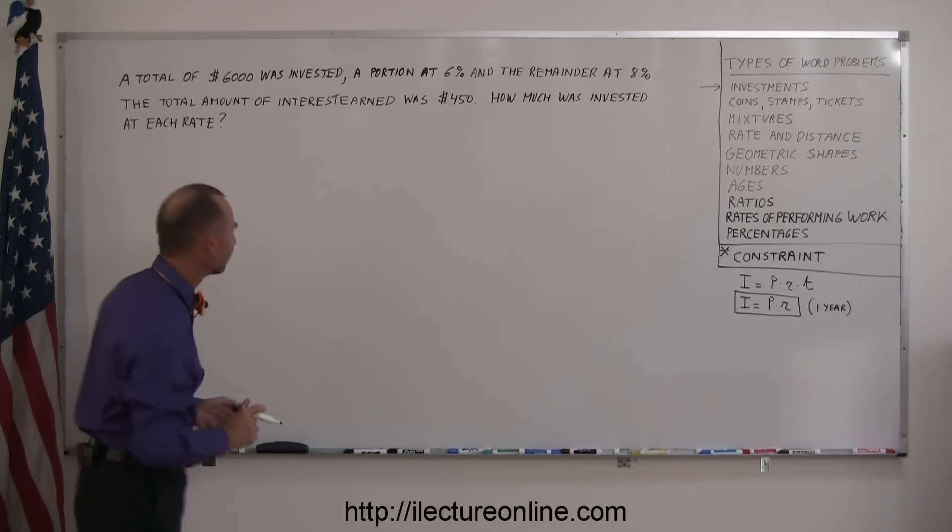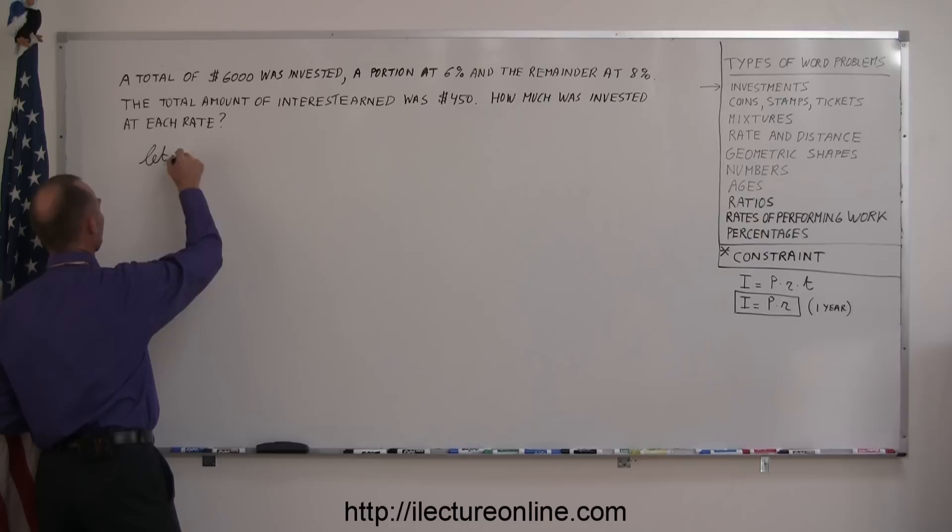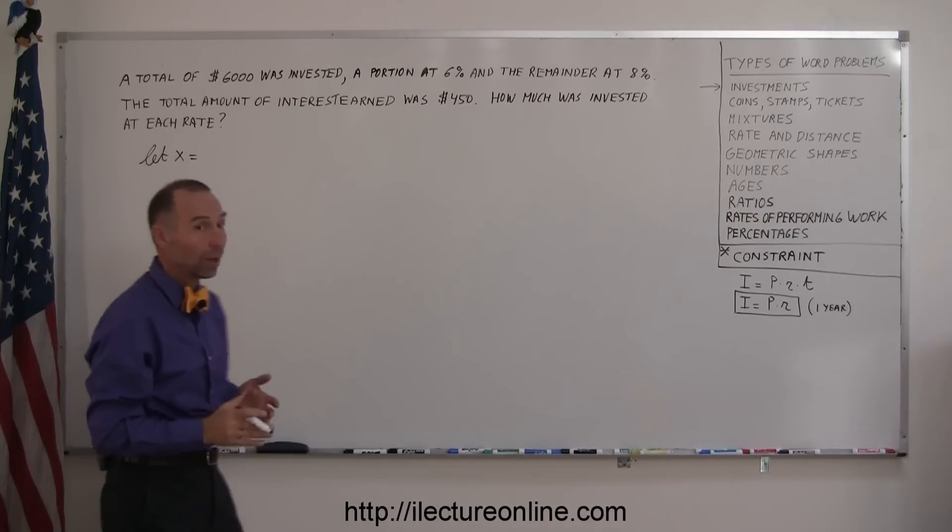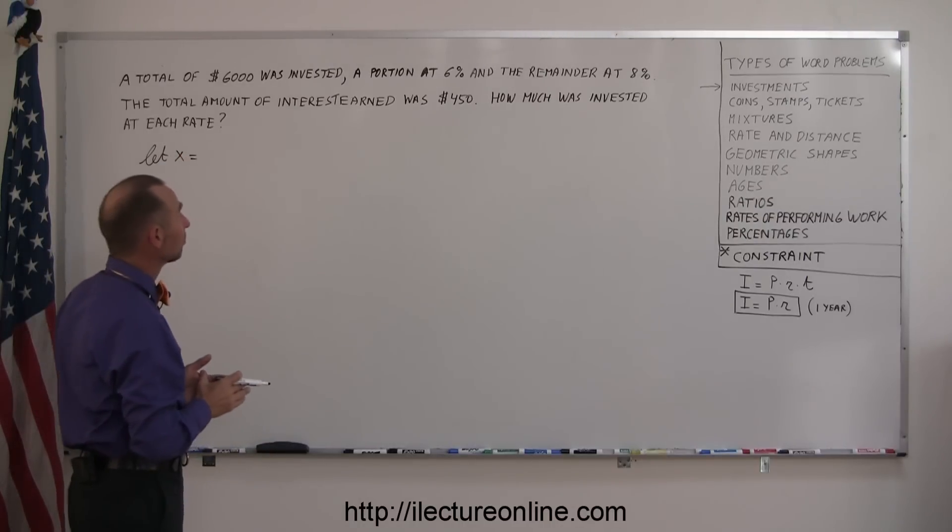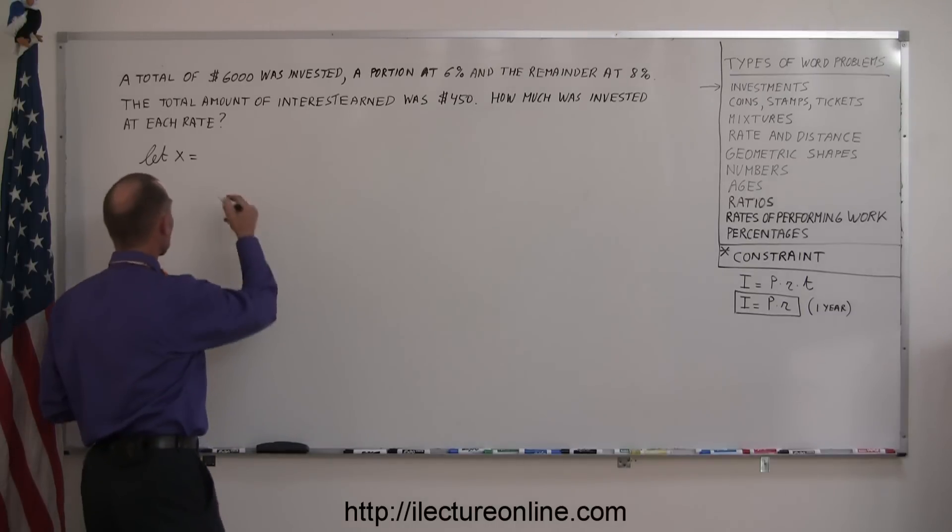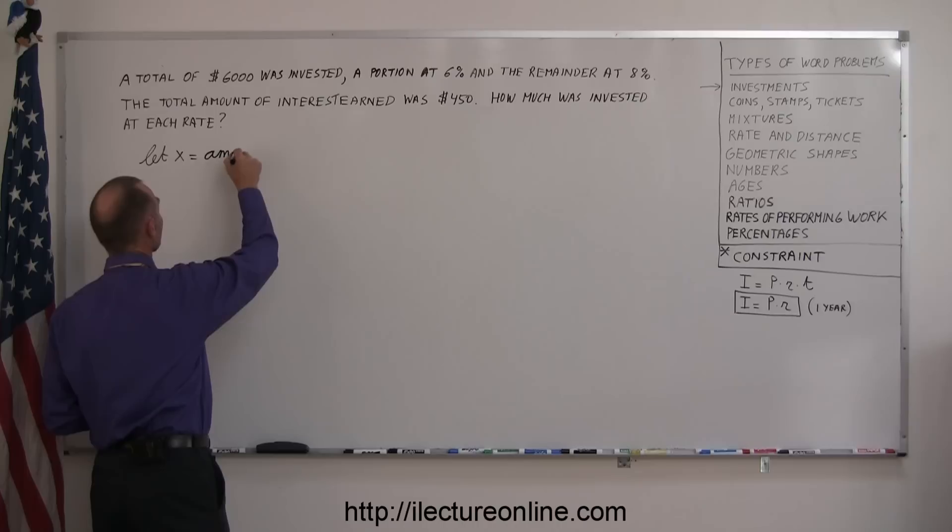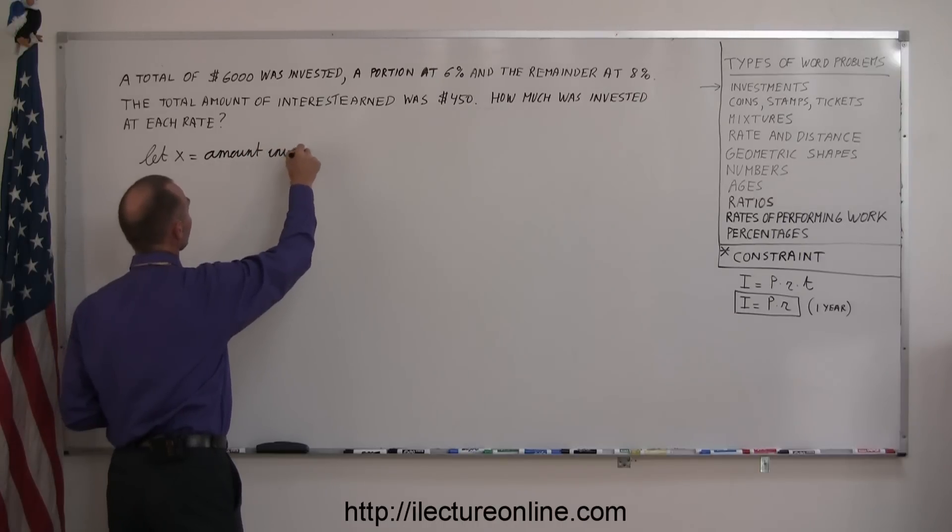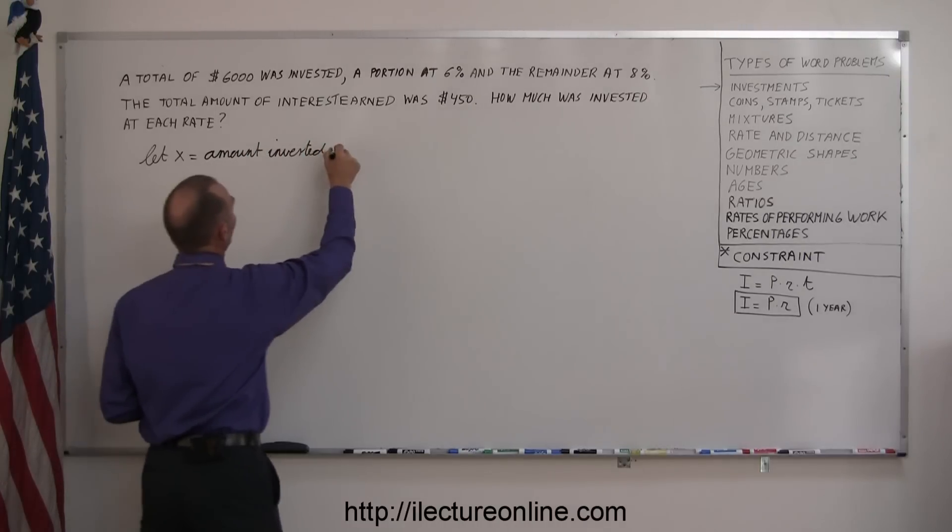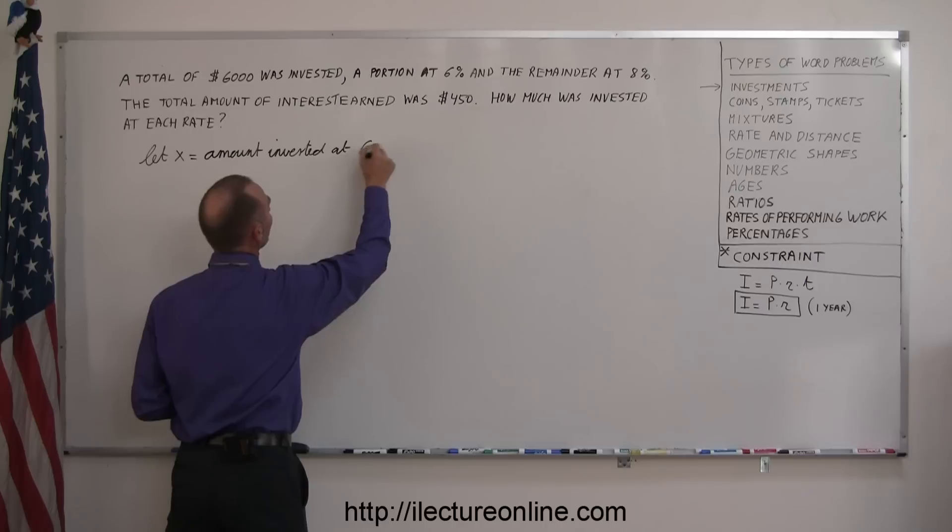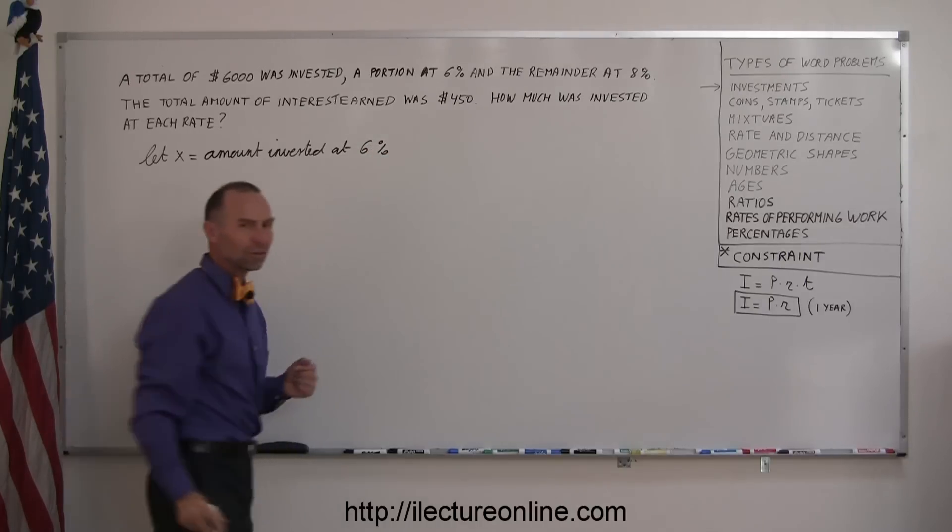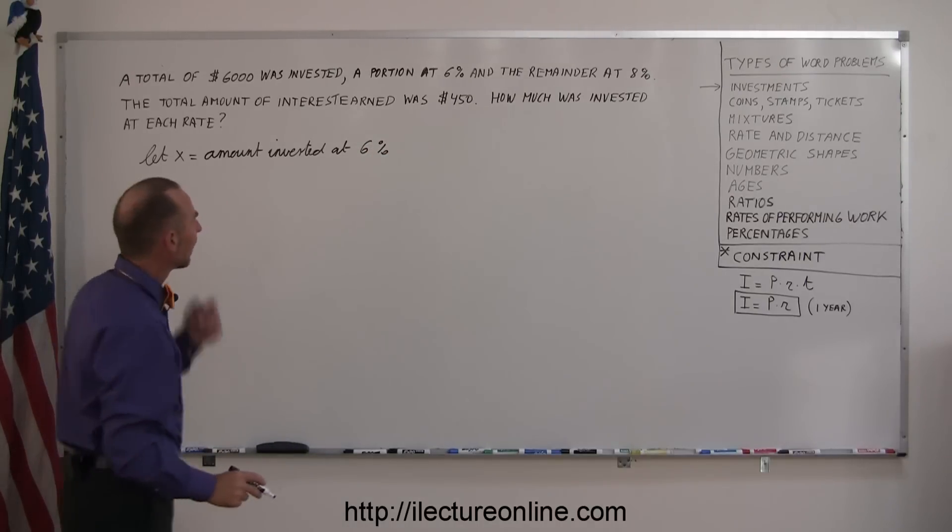So how do we start? Let X equals... Now, it's going to equal what? Well, we had $6,000 invested, some of it at 6%, and the remainder at 8%. So, let X equal the amount invested at 6%. Then how do we express the amount invested at 8%?